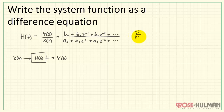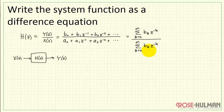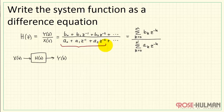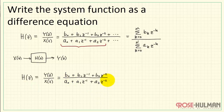We can write this more compactly using summation notation. In the numerator, we start at k equals 0 and go up to capital M, written as b sub k times z inverse to the kth power. Similarly, in the denominator, to keep things general, I'll write this as N instead of M. We start at k equals 0 with the a sub k coefficients, multiplied by z inverse to the kth power. Let me consider the case of N equals 2 to keep our subsequent development a little more specific.